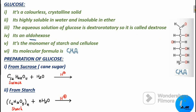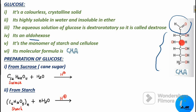Why aldohexose? 'Aldo' refers to the aldehyde group present in the structure of glucose. Since it has an aldehyde group it is called 'aldo', and since it has six carbon atoms it is called 'hexose'. So aldo + hexose = aldohexose. Glucose is also the monomer of starch and cellulose.